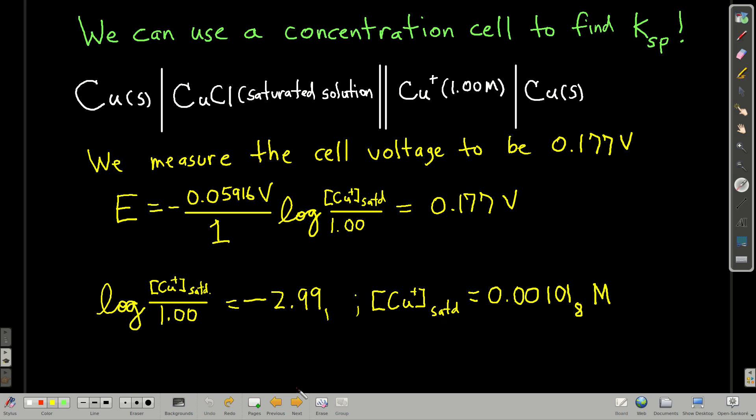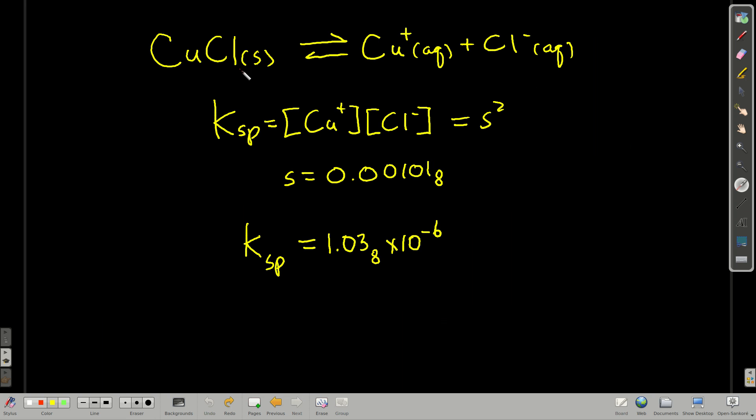and we get 0.00102 molar for the concentration of copper 1 in the saturated solution. Okay, that's going to be our S, or our solubility. And this is the equilibrium that occurs in that saturated solution. So Ksp for this is just equal to the concentration of copper 1 times the concentration of chloride, and they're going to be the same, and that's going to be S squared.